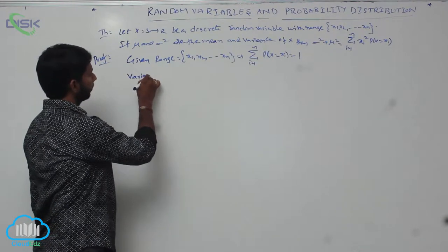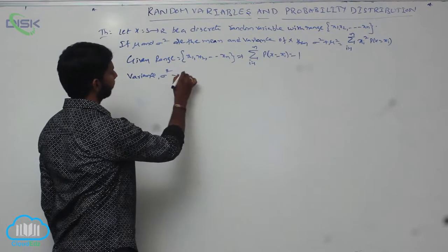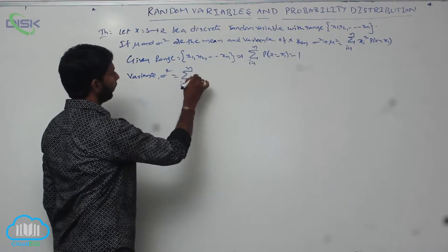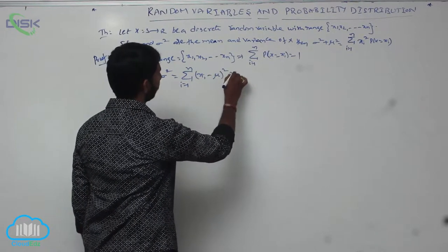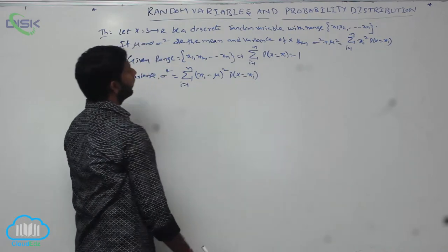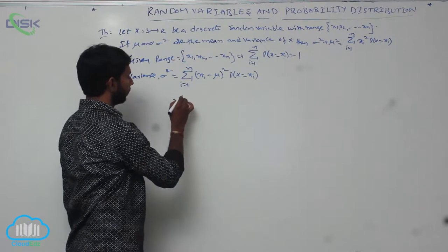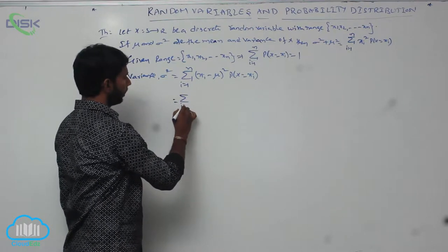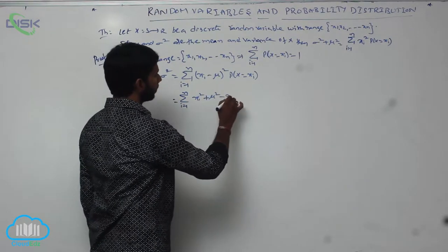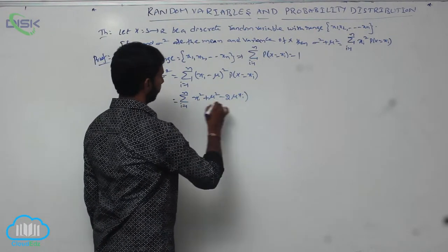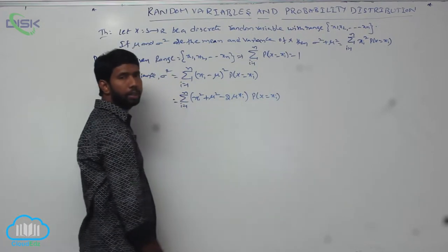Variance sigma square is equal to sigma i equals 1 to n, x_i minus mu whole square into p of x_i equals x_i. That is, the sum from i equals 1 to n of (x_i minus mu) whole square into p of x equals x_i.